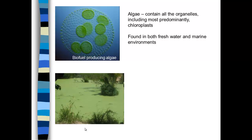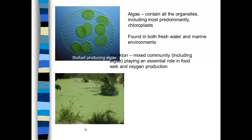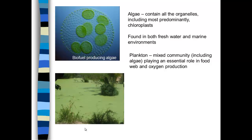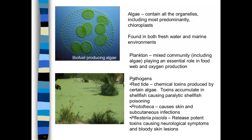Algae has chloroplasts. You find algae in both freshwater and marine environments. Plankton are generally in fresh and marine environments, and this includes algae and protozoa. Different pathogens include red tide — red tide is a type of algae that causes paralytic poisoning. It accumulates in shellfish and is characterized by a red color to the algae. Prototheca causes skin and subcutaneous infections, and Pfisteria piscida can release potent toxins, causing neurological symptoms and skin lesions. So there are pathogenic algae.